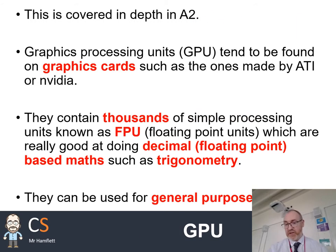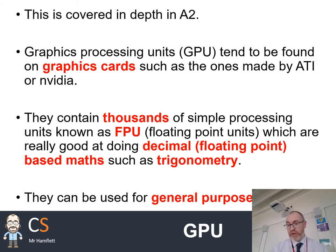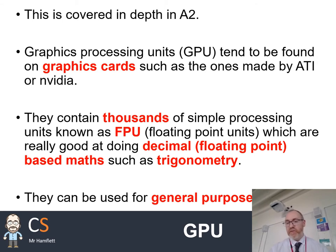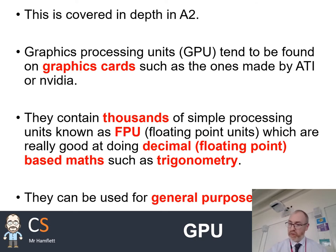Graphics cards contain GPUs — graphical processing units — and these have thousands of floating-point units. Floating-point refers to decimal calculations, such as floating-point binary. GPUs are very good at floating-point mathematics such as trigonometry. They can also be used for general-purpose computing, which we'll explore in a separate lesson. For now, they're being introduced simply as a way of doing parallel processing.